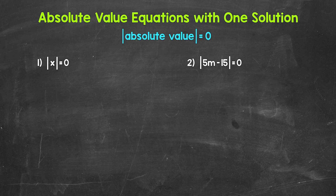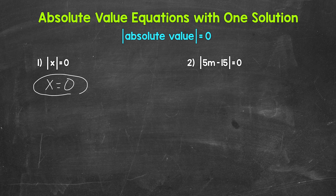Let's jump into number one where we have the absolute value of x equals zero. Remember, the absolute value of a number is its distance from zero. So what does x have to equal here? Zero. There's only one possibility, one solution — x equals zero. And that's our one solution.